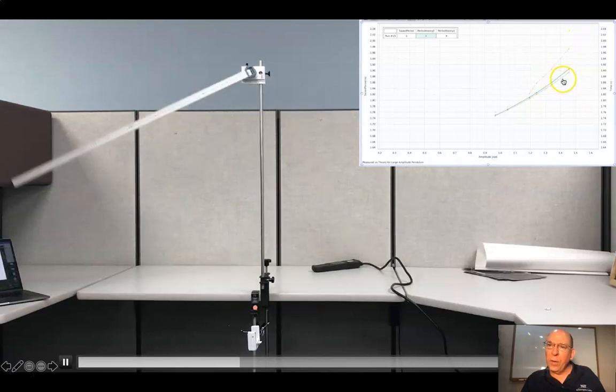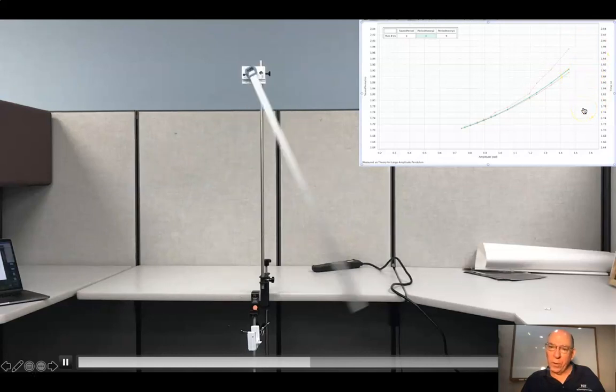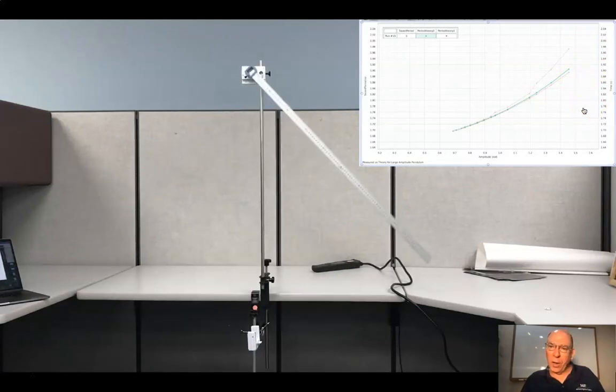And you can see the periods start to appear as well as the theoretical ones on the graph. So this is the measured period up here, and then the two different approximations. And they're really not that far apart to start with. This timescale is pretty small. We'll see that in a little bit. But then they totally converge as the amplitude gets smaller.